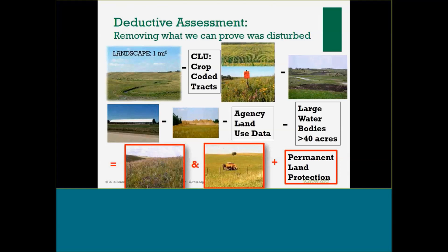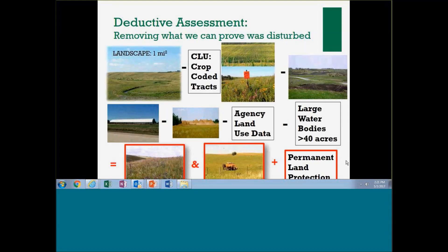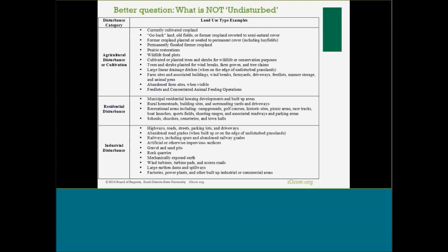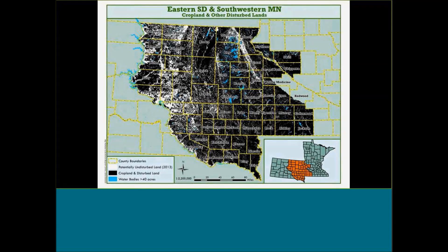You can't look at aerial photography and say something is native, but you can look at aerial photography and say with reasonable assurance that something is not native — so it's an order of deduction. The final step is a permanent land protection assessment. With partner data we've built a pretty comprehensive coverage of permanent protection — agency fee-title owned or permanent easement. The three primary categories we look for when throwing out land are: agricultural disturbance or cultivation, residential disturbance, and industrial disturbance. To date we've assessed eastern South Dakota and portions of southwest Minnesota with this methodology.